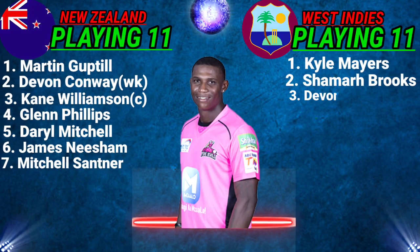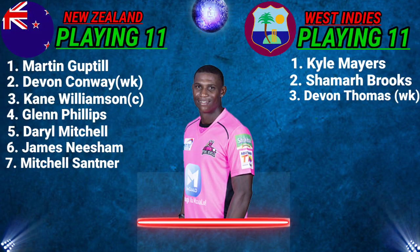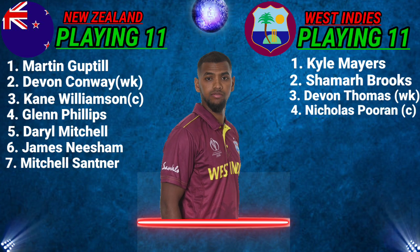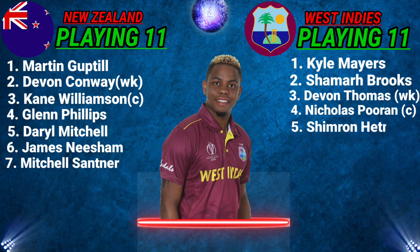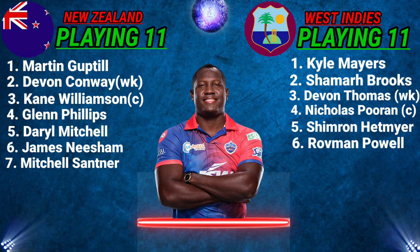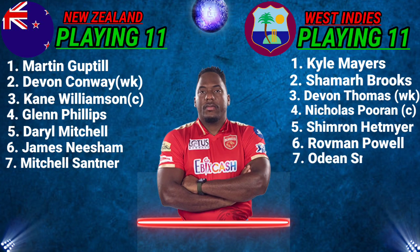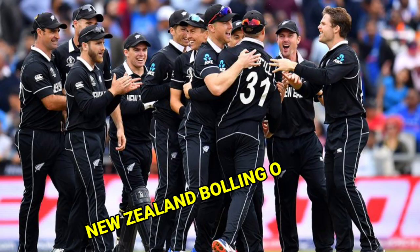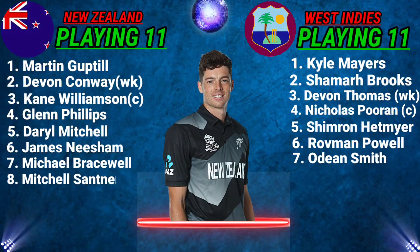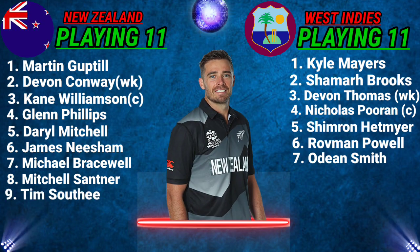No.3 Devon Thomas, right-hand batsman. No.4 Nicholas Pooran, left-hand batsman and captain. No.5 Shimron Hetmyer, left-hand batsman. No.6 Rovman Powell, right-hand batsman. No.7 Odean Smith, batting all-rounder. New Zealand bowling order: No.8 Mitchell Santner, left-hand batsman.